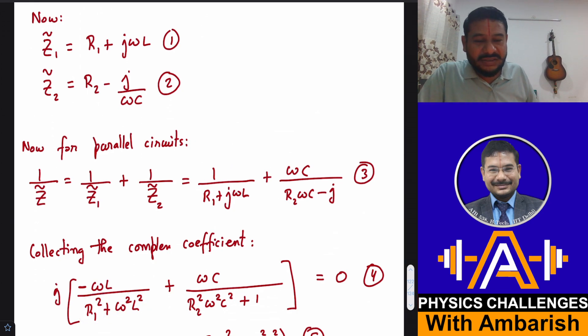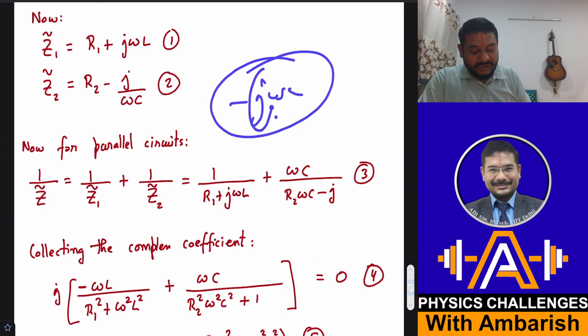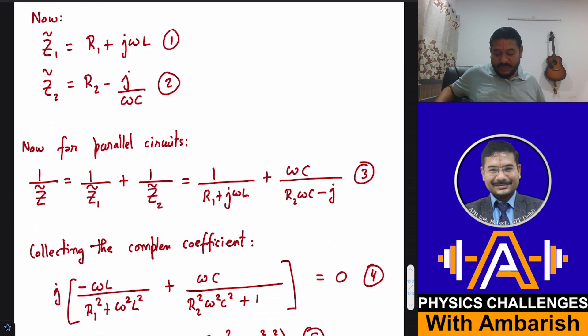Remember that minus J square is nothing but plus 1. J square is minus 1. And then complex coefficient, since you got minus J omega L into 1, so coefficient of J becomes minus omega L over here. So I hope you understood this part.